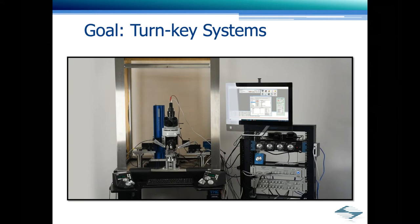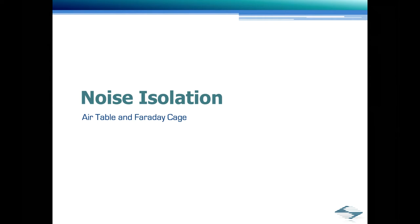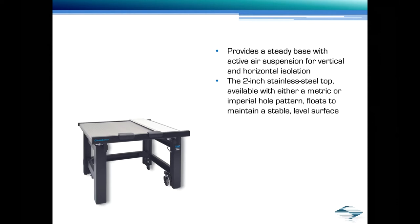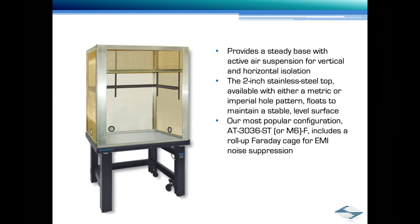Electrophysiological recordings are highly susceptible to environmental factors that introduce noise to the signals. Predominant noise sources are mechanical vibration and electromagnetic interference. Sutter offers a series of vibration isolation tables and accessories from TMC Vibration Control that provide the foundation for the rig. Each table provides a steady base with active air suspension for vertical and horizontal isolation. The 2-inch stainless steel top is available in either metric or imperial hole pattern. Our most popular configuration, the AT3036, is a 30x36 table and includes a roll-up Faraday cage for EMI noise suppression. Optional accessories include casters for making it easier to move the table, padded armrests, and air compressor for those labs that don't have house air.